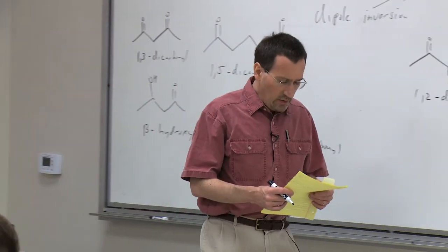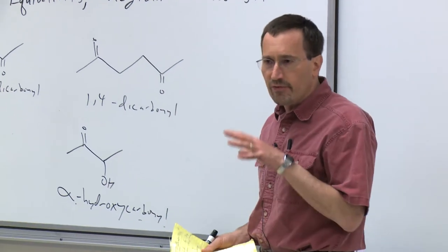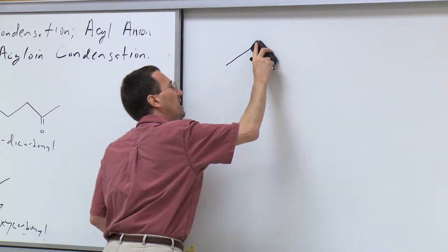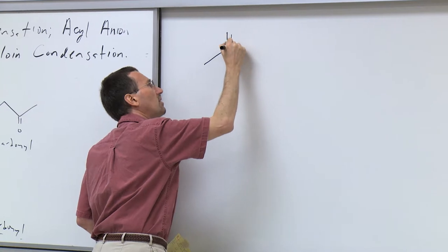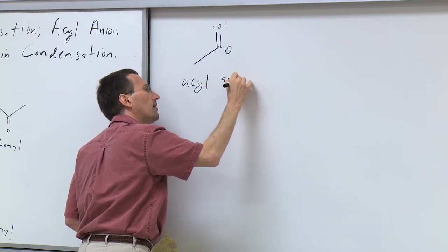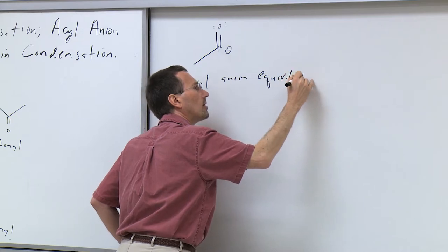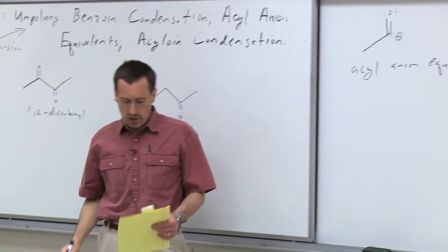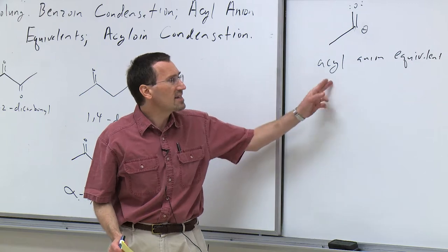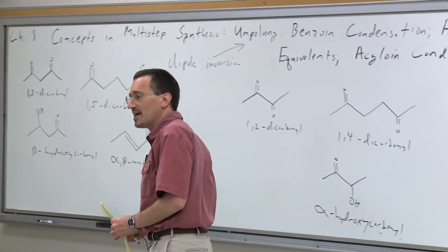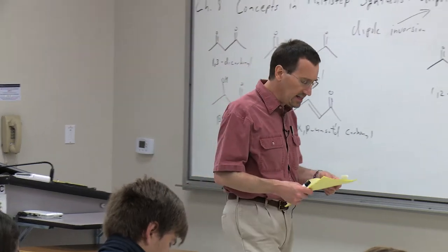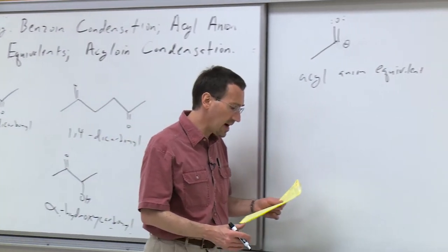I want to talk about the idea of this inversion of nucleophilicity and propose the idea of an acyl anion equivalent. This concept goes back a long, long time. The benzoin condensation has been known since the 19th century. The idea of an acyl anion equivalent and umpolung—inverting natural polarity—really comes about in the 20th century, particularly in the 1970s with Seebach.